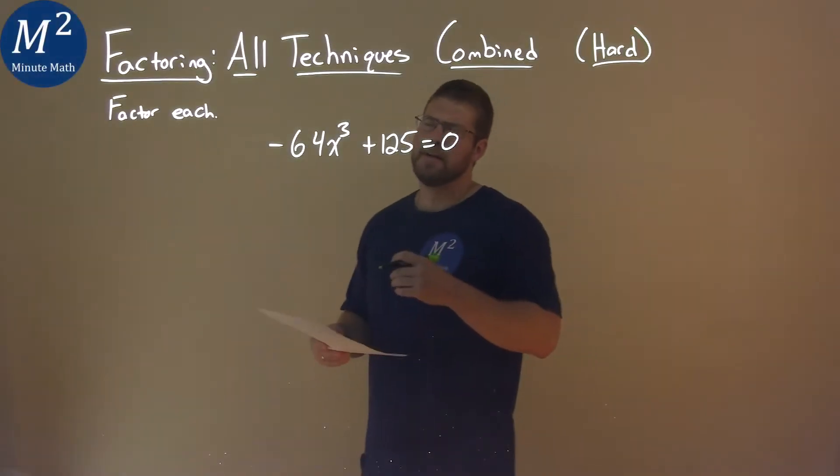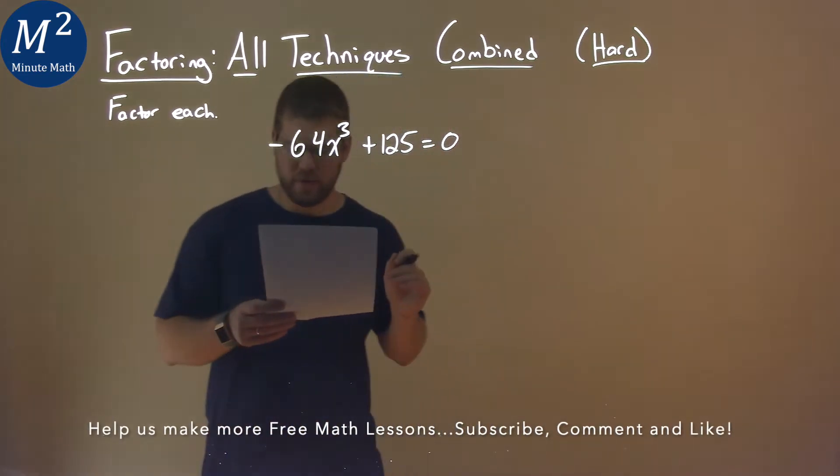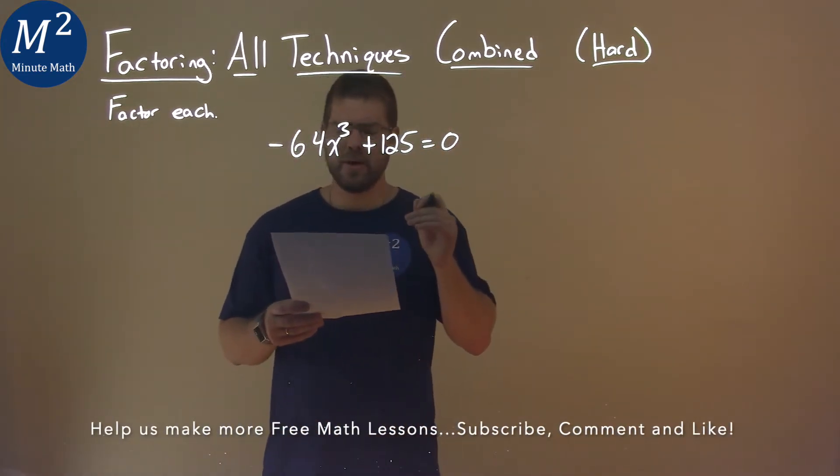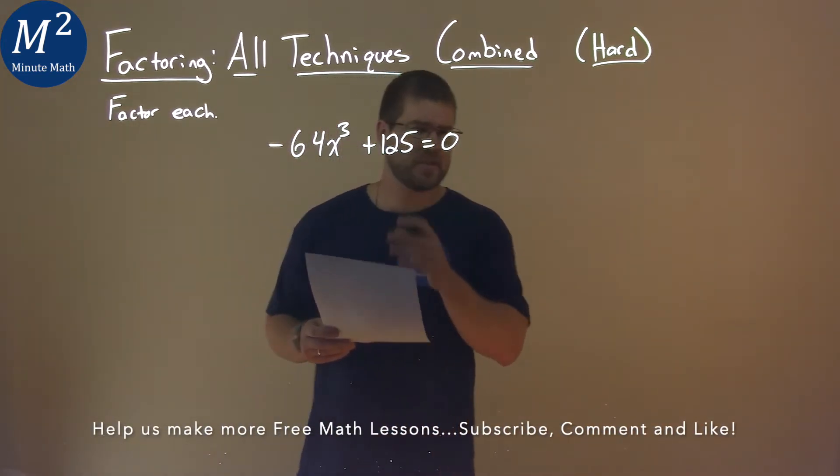We're given this problem right here, negative 64x to the third plus 125 equals zero. We're going to factor this. We're not going to solve it, we're just going to factor it.